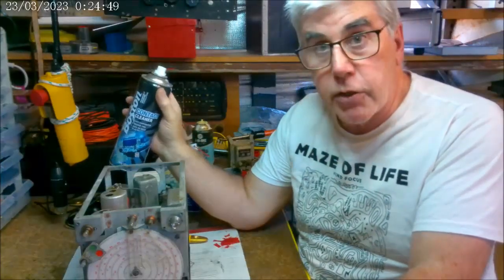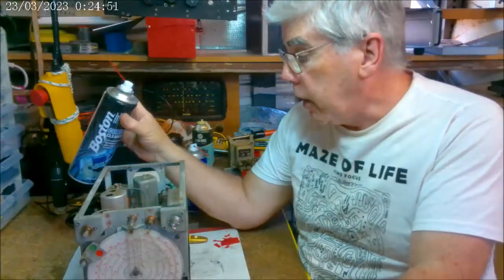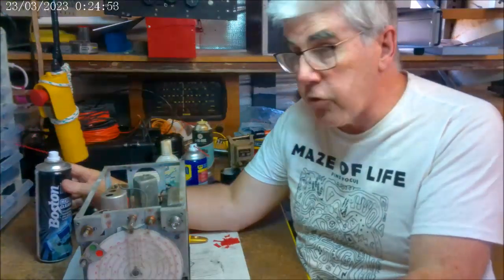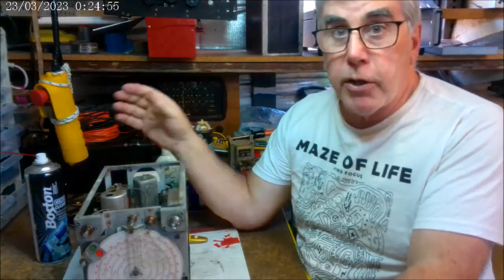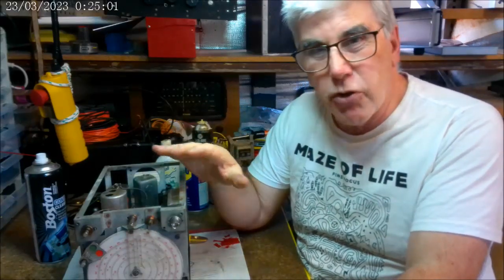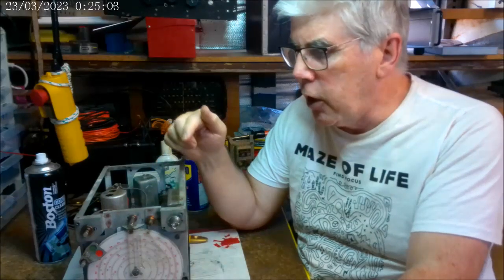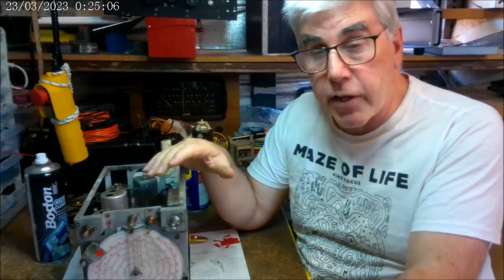Now, that might seem like a strange thing to do, but contact cleaner dries very quickly. It doesn't leave a residue. But you can flush out very fine particles of material, and you can remove any sort of surface grease and that sort of thing. And of course, you go through all the switch contacts while you're at it.